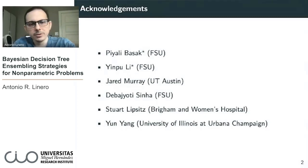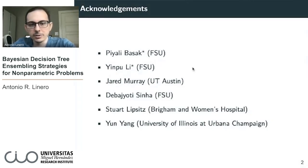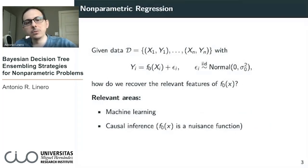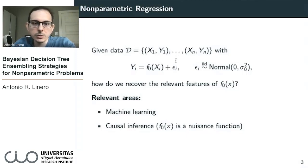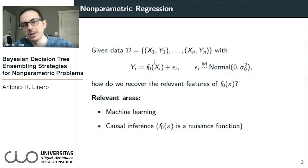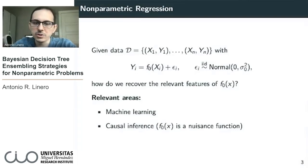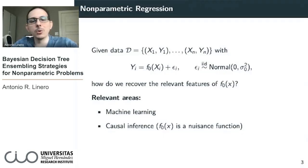I'd like to acknowledge some collaborators — a few students at Florida State, as well as some faculty collaborators at UT Austin, FSU, Harvard, and UIUC. Jumping right into it, let's consider a fairly basic semi-parametric regression problem. You're given data consisting of (x1, y1) up to (xn, yn) — pairs of predictors and outcomes — and you posit some sort of semi-parametric regression where y is related to x through some unknown function F0, with Gaussian errors. The appeal of doing semi-parametric regression is well known.